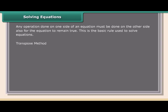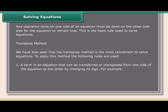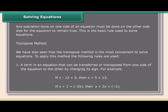Transpose method: The transpose method is the most convenient way to solve equations. A term in an equation can be transferred or transposed from one side to the other by changing its sign. For example, if x − 12 = 5, then x = 5 + 12. If x + 1 = −2x, then x + 2x = −1.